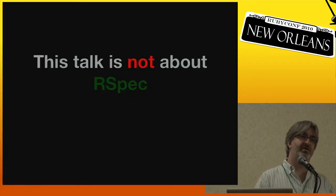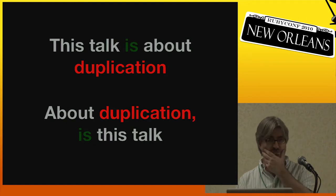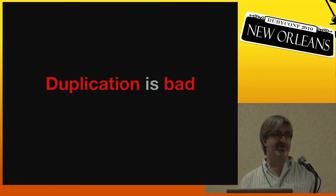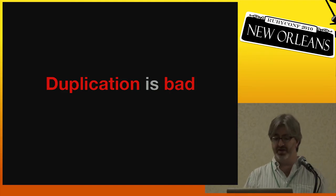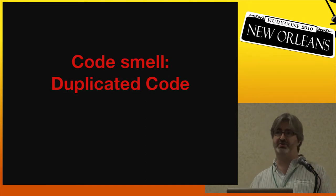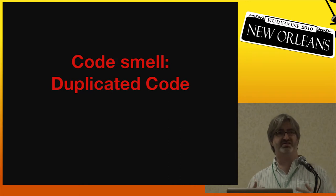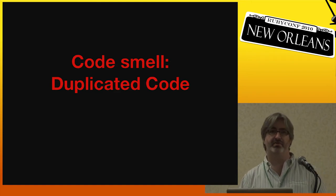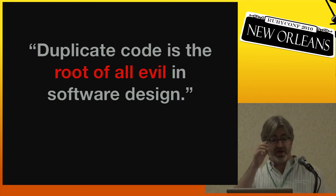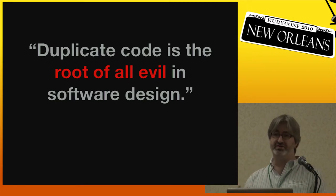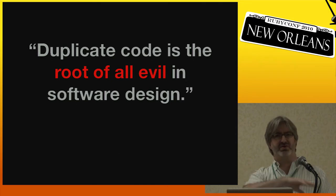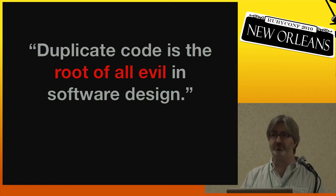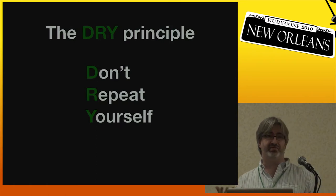But this talk is not about RSpec. This talk is about duplication. We all know that duplication is a bad thing. Martin Fowler's book Refactoring talks about code smells — things you notice in code that smell. One of the code smells he describes is duplicated code. And Uncle Bob Martin, in his book Clean Code, said duplicated code is the root of all evil in software design. And of course there's the DRY principle, which everybody here is surely familiar with.